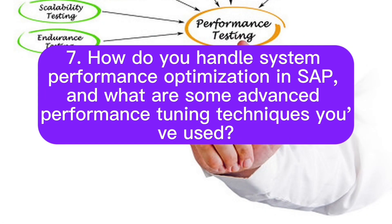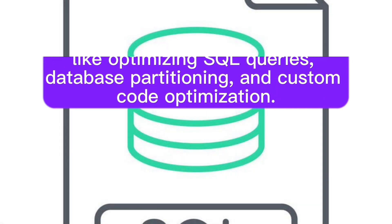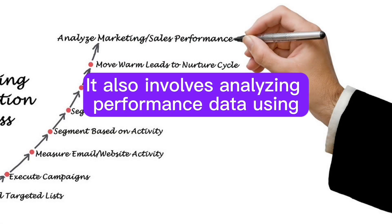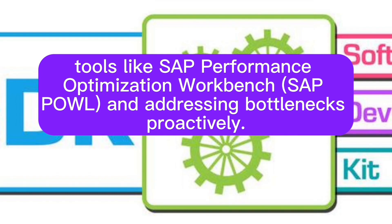Question 7: How do you handle system performance optimization in SAP, and what are some advanced performance tuning techniques you've used? Answer: System performance optimization includes advanced techniques like optimizing SQL queries, database partitioning, and custom code optimization. It also involves analyzing performance data using tools like SAP Performance Optimization Workbench and SAP PALM, and addressing bottlenecks proactively.